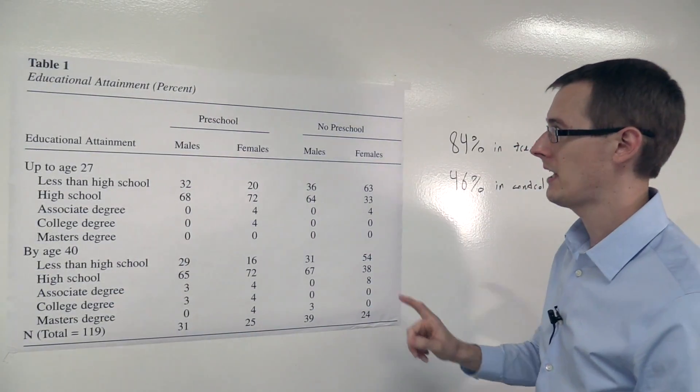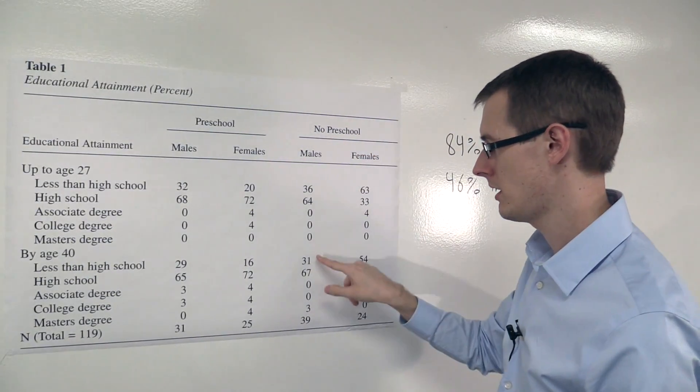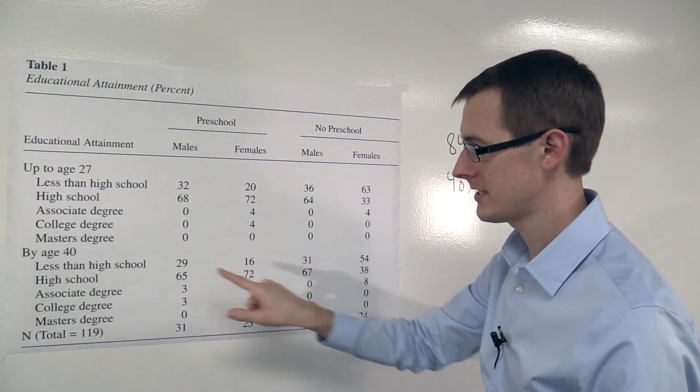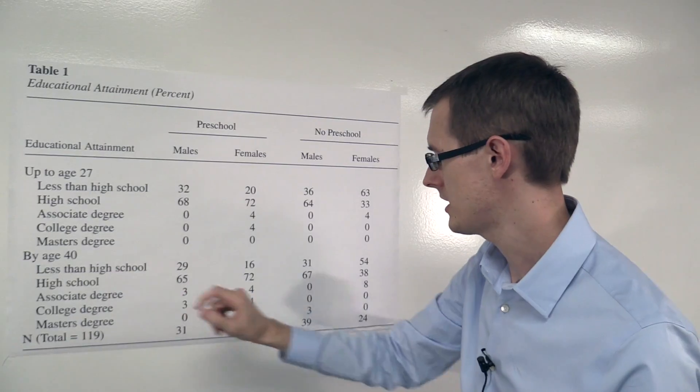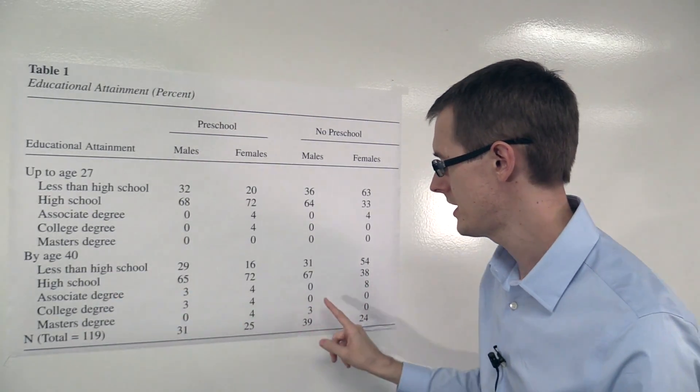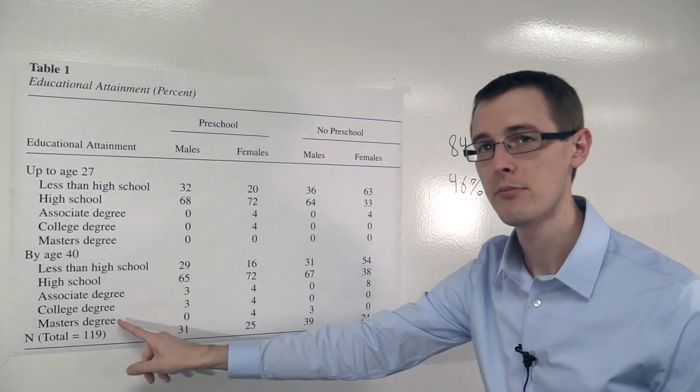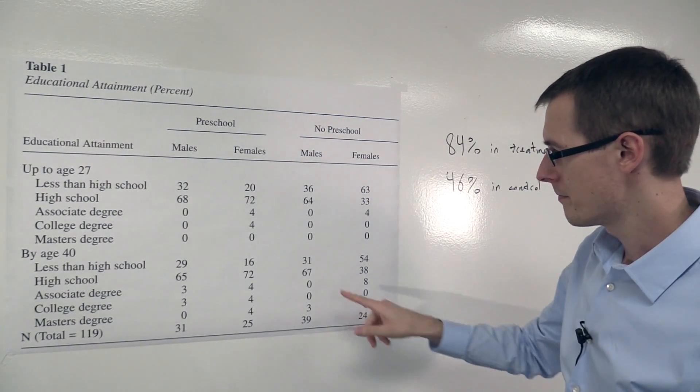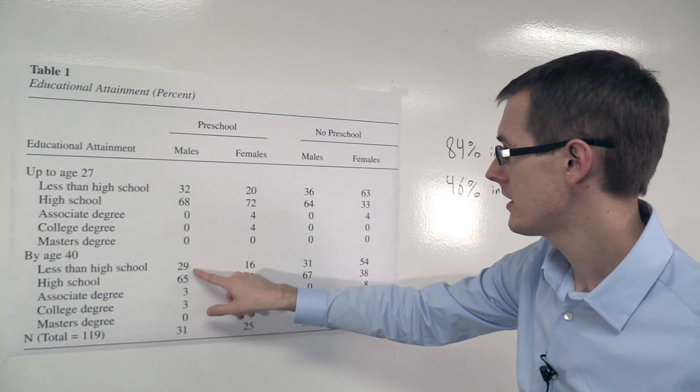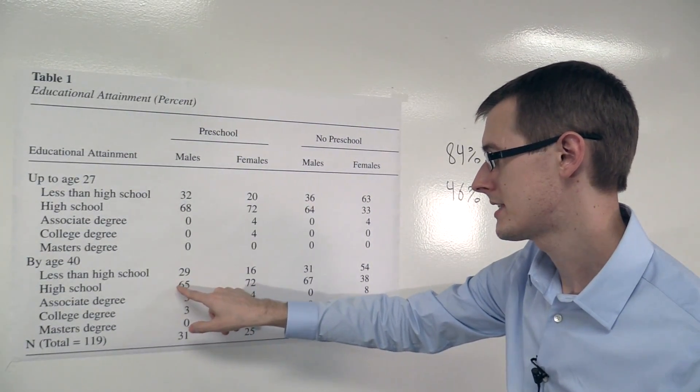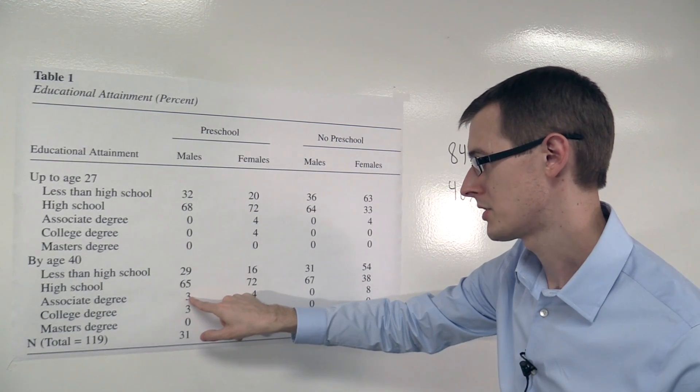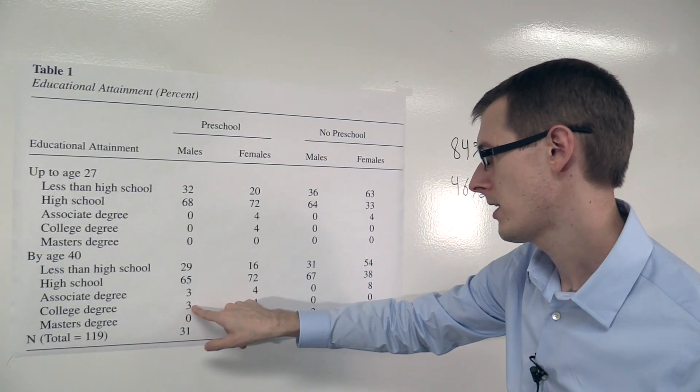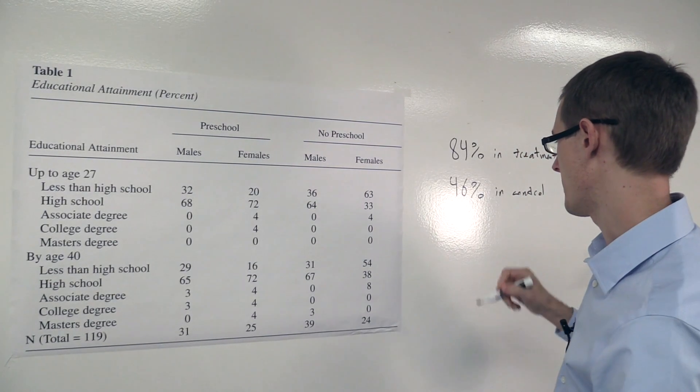Now let's compare that with the control group, males who didn't get preschool. 31% high school, less than high school, 67% high school, 0 associate, 0 college, 3 masters. Okay, so in the treatment group we see that 65% plus 3, that's 68, plus 3, that's 71, plus 0, that's 71.